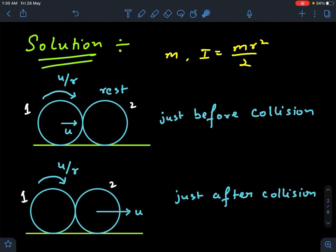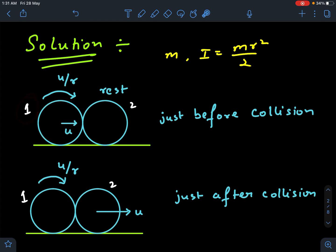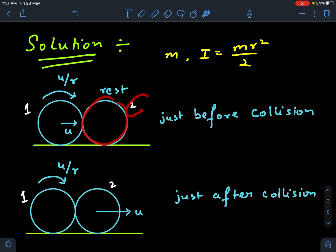I have considered that the mass of the cylinder is m and the moment of inertia is mr²/2. Initially, the first cylinder — marked as 1 — is rolling with the speed of the center of mass u, so the angular velocity would be u/r. The second cylinder, marked as 2, was at rest.